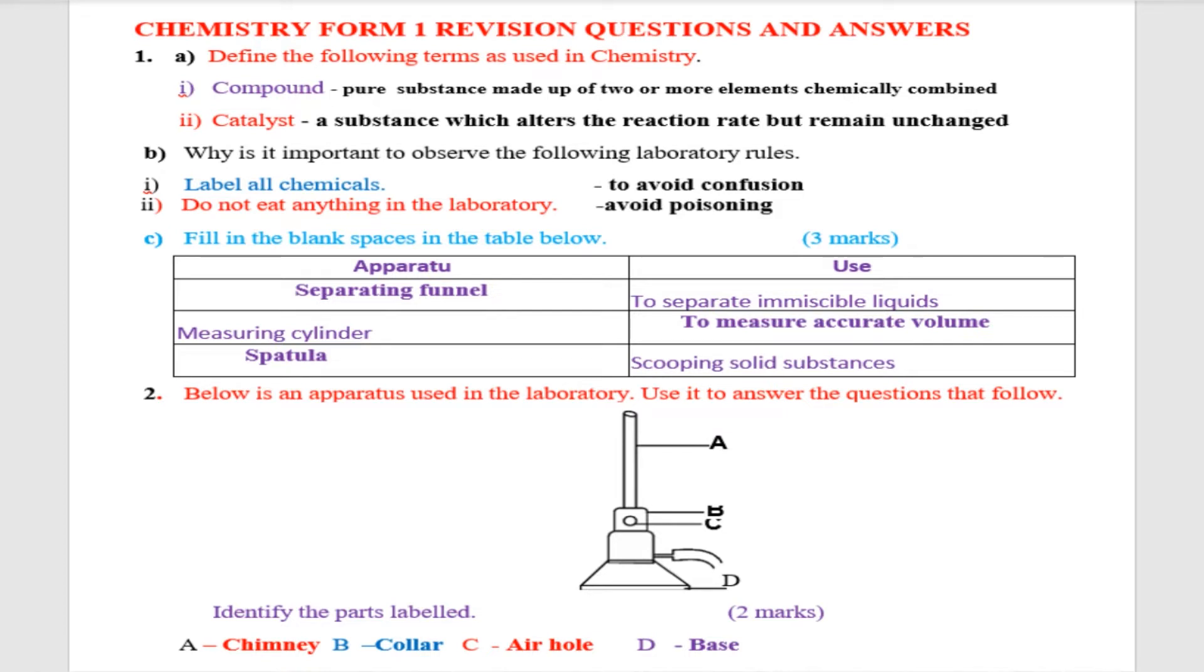Below we have an apparatus used in laboratory. Use it to answer the questions that follow. You have an apparatus here well drawn. You are told identify the parts labeled. A is chimney, B is collar, C is air hole, and then D is base. So you can see the apparatus well drawn. Some other time they can tell you to draw a well labeled Bunsen burner.